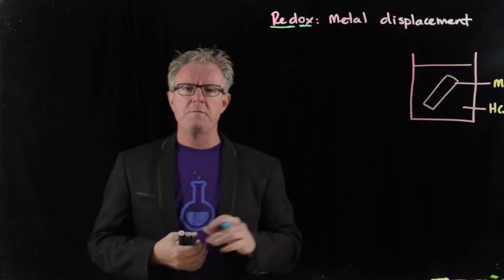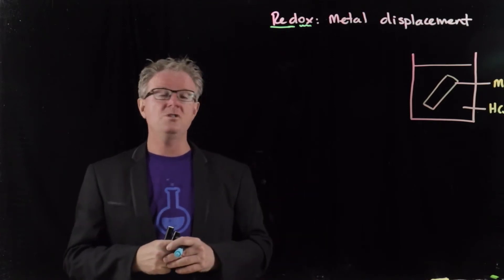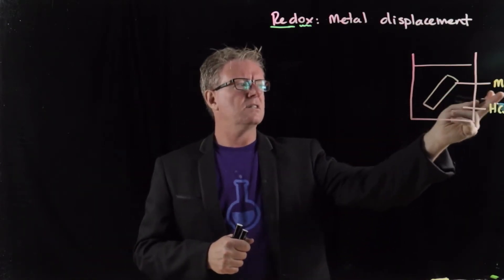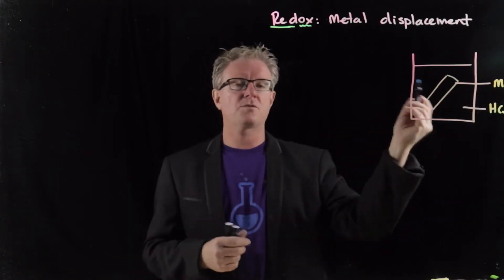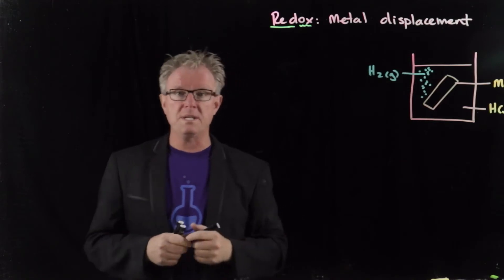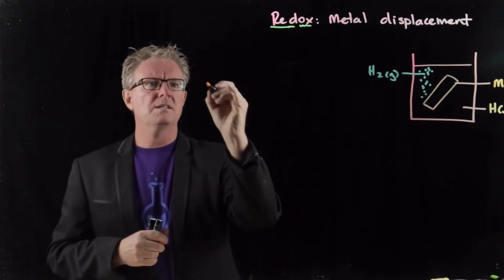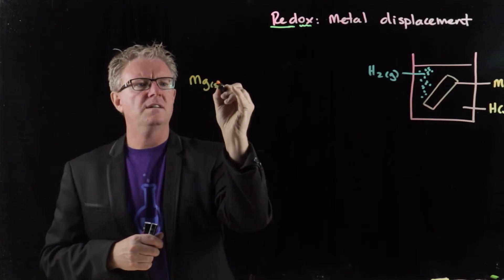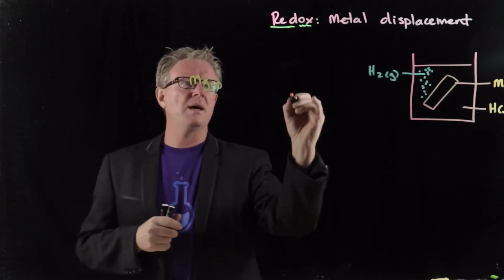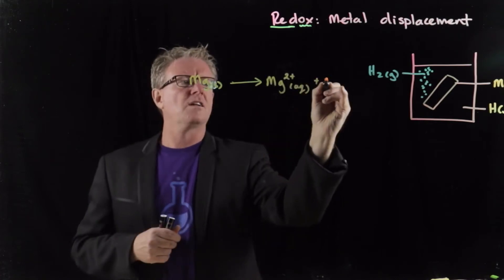Moving on to another example — a very familiar one. You can see here a typical example from junior chemistry labs: a piece of magnesium ribbon in hydrochloric acid. You know it produces bubbles of hydrogen gas, confirmed by the pop test. Something has to be oxidized, something has to be reduced. The magnesium here is in the solid state, and the observation is that it seems to disappear — it dissolves because it's turning into the magnesium ion. The only way that can happen is if it gets oxidized — it loses electrons.